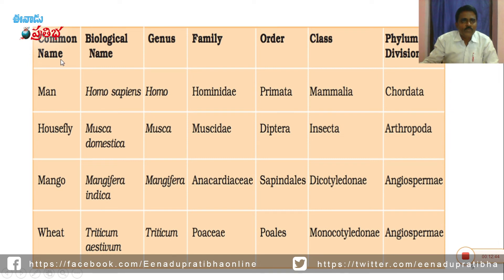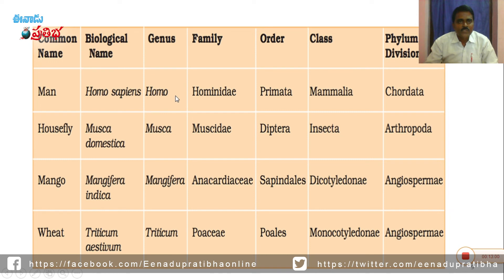If you see the table — common name, biological name, genus, family, order, class, phylum or division. Man: biological name is Homo sapiens. Genus is Homo, species is sapiens. Man belongs to family Hominidae, order Primates, class Mammalia, and phylum Chordata. Housefly: scientific name is Musca domestica. Musca is the genus, domestica is the species. Family of housefly is Muscidae, order is Diptera, class is Insecta, and phylum is Arthropoda.